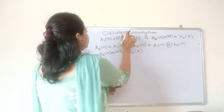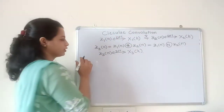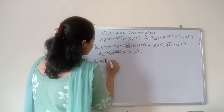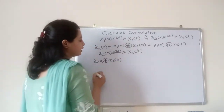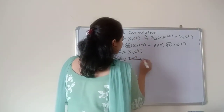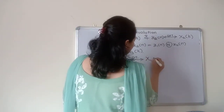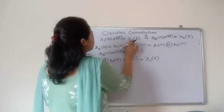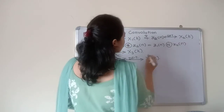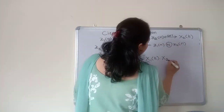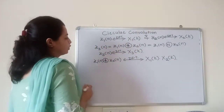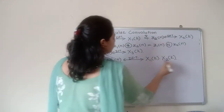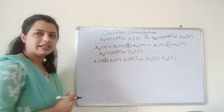Let us see the statement for this property of circular convolution. If we have the circular convolution of two sequences x1 of n and x2 of n, it has a DFT which is the multiplication of the DFTs of those individual sequences — that is, X1 of k multiplied by X2 of k. So we have multiplication of these two DFTs when we have circular convolution in the time domain.